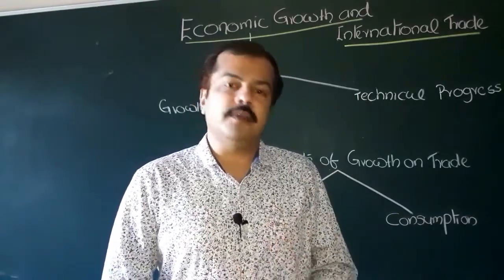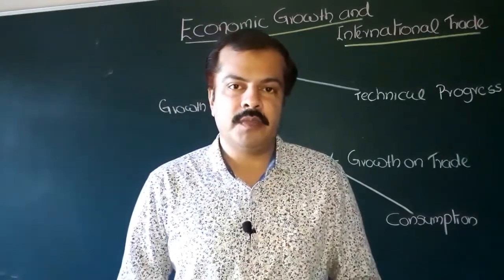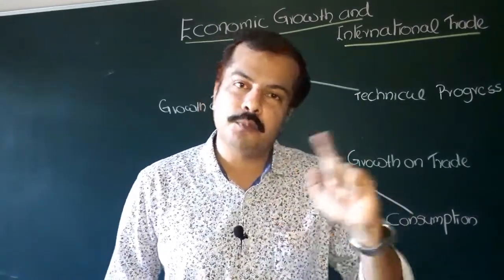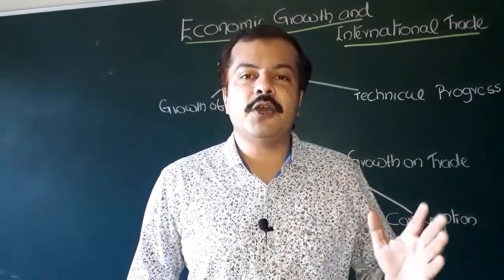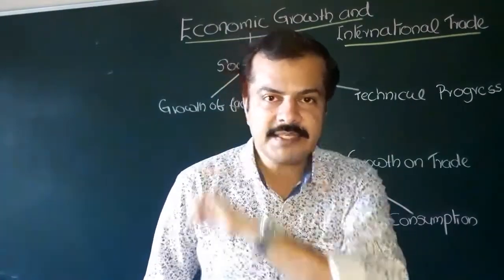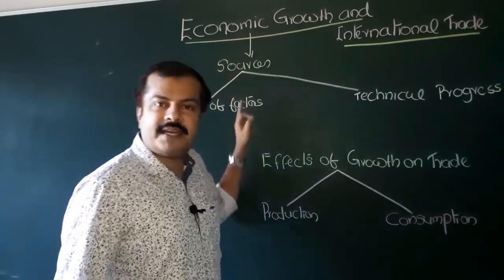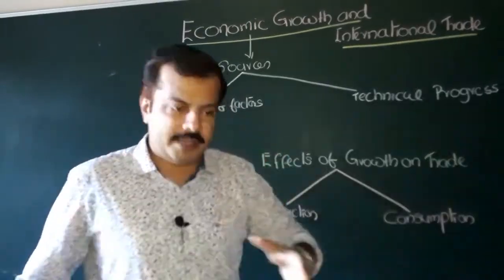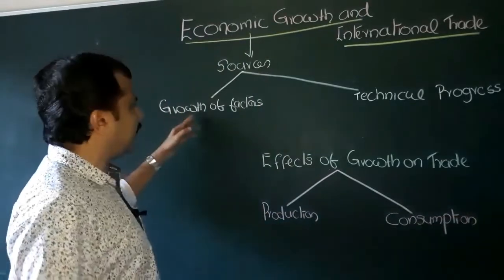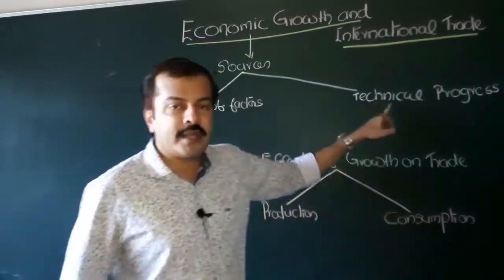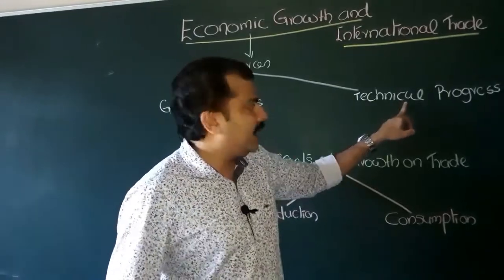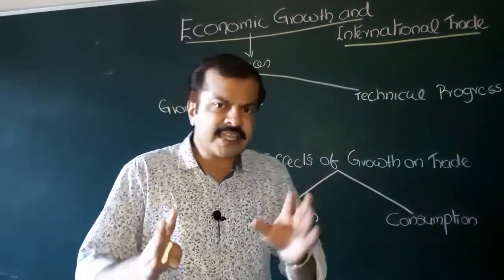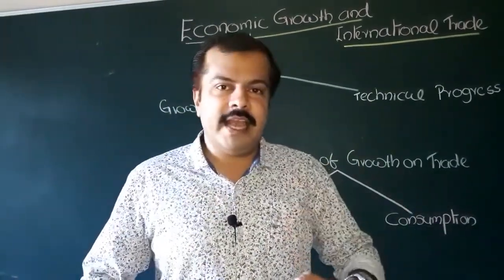When we talk about economic growth, there are two sources. One, it can be as a result of increase in the endowment of one or both factors of production, or as a result of an improvement in technology. The sources of economic growth can be classified into two categories: increase in the endowment or availability of factors of production — let us call it growth of factors of production — and the second one, improvement in technology, which we call technological or technical progress.